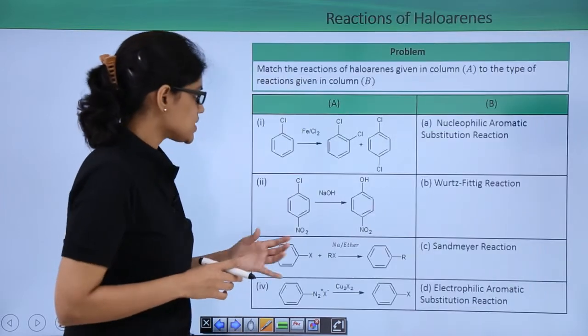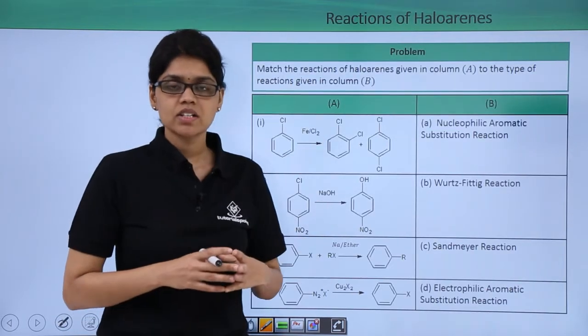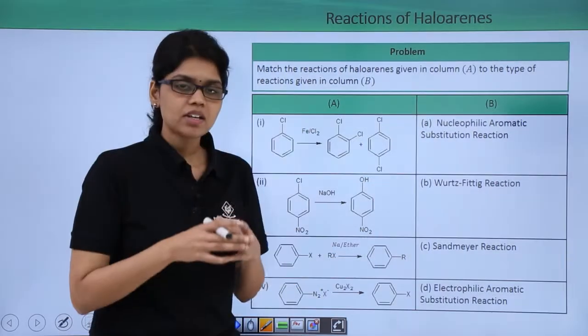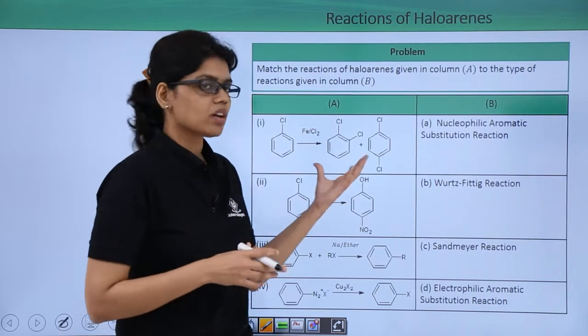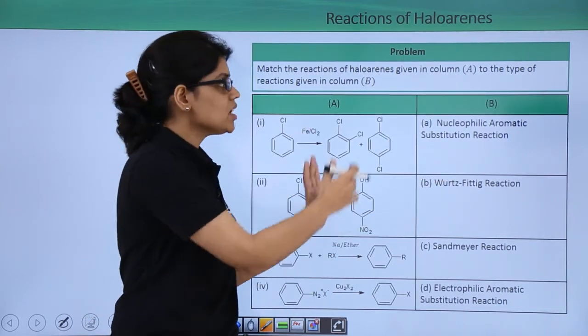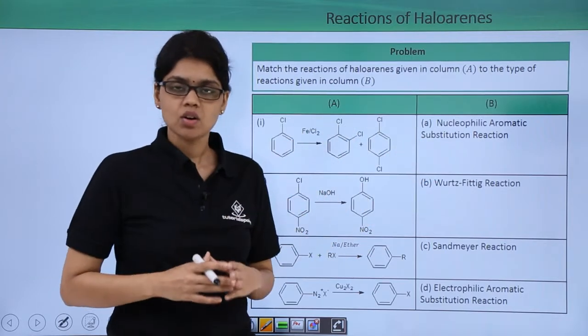So here in this question we have a set of reactions given in column A and we have type of reactions given in column B. What we have been asked is to essentially match column A with column B, that is match the reactions given here with the type of reactions given in column B.